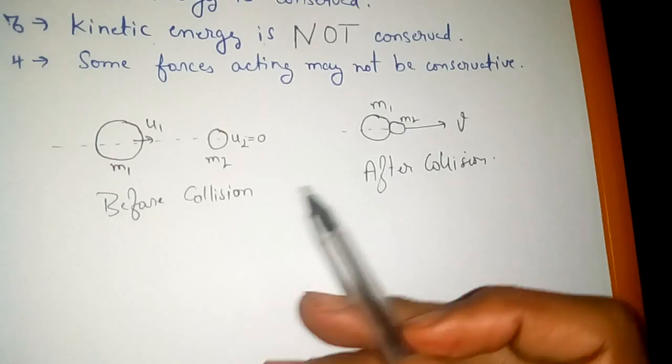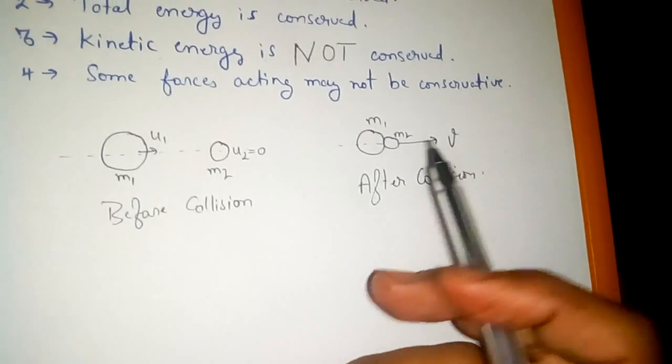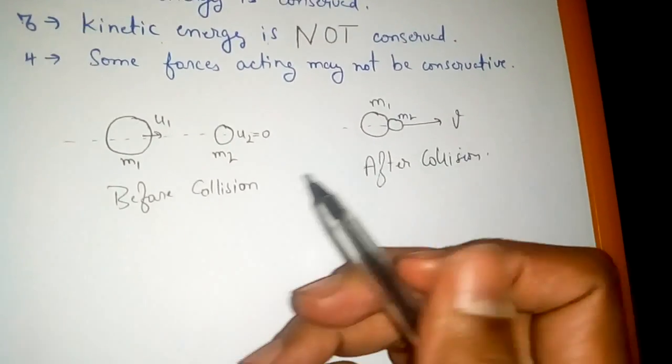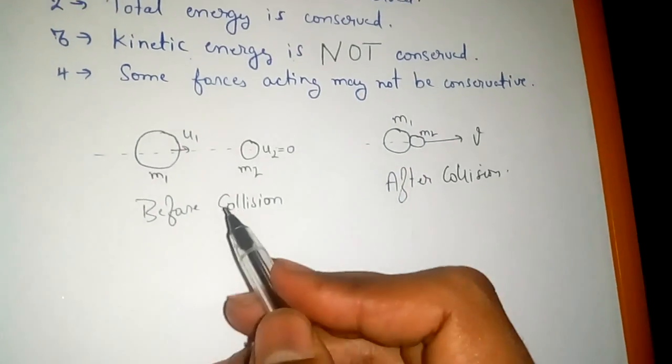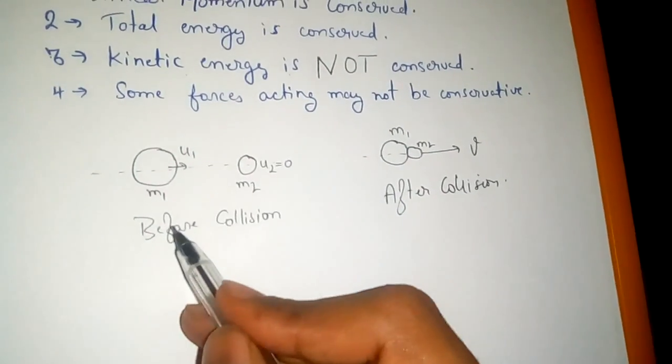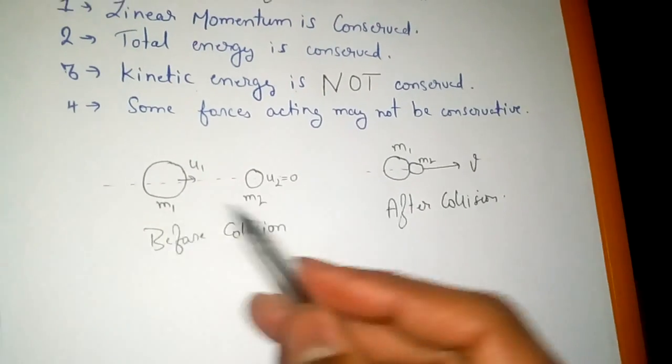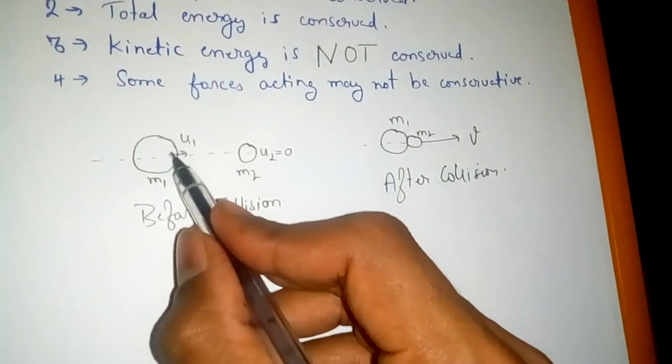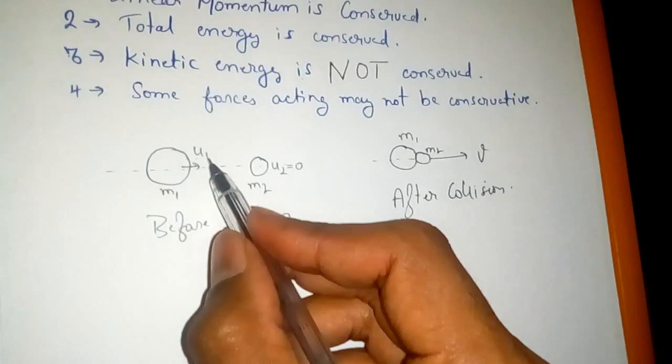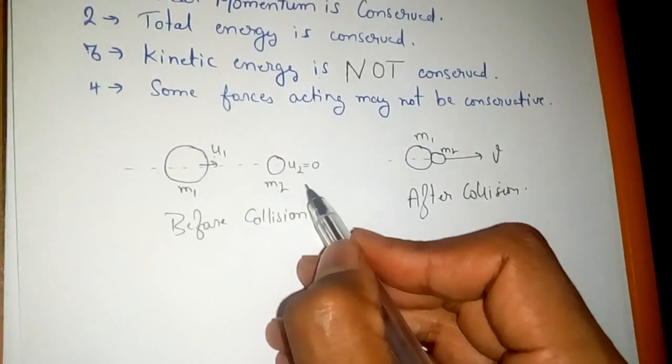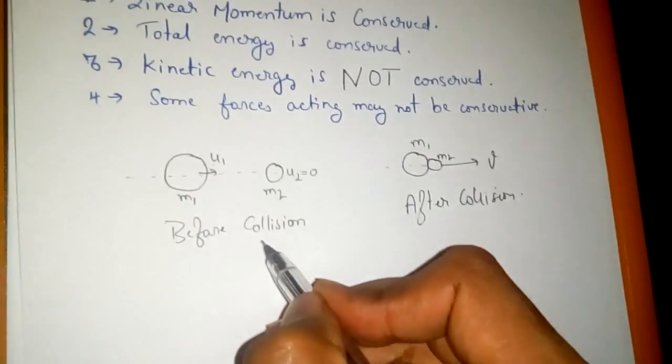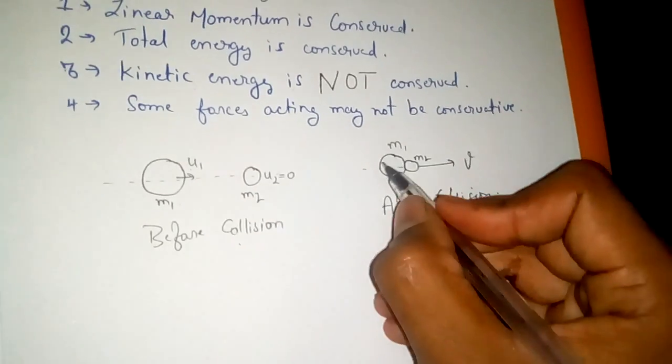Now let's get to the actual case where we see the collision. We can see the object m1 and m2, with m1 moving with initial velocity u1 and m2 at rest initially before collision. After the collision they both move with final velocity v.